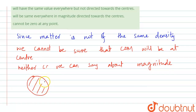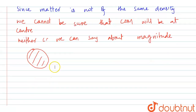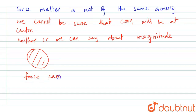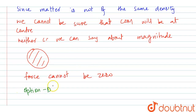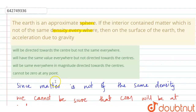Option D says gravity cannot be zero at any point — this is true. As long as there is mass, there will be a gravitational force, because the mass will attract any body outside the planet. So the force cannot be zero. The correct answer is option D.